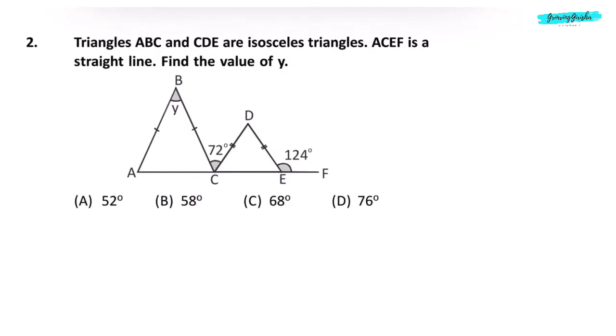Question 2. Triangles ABC and CDE are isosceles triangles. ACEF is a straight line. Find the value of Y. Angle E is 124 degrees. Angle E in triangle DCE will be 180 minus 124, that is equal to 56 degrees. If angle E is 56 degrees, angle C will also be 56 degrees because triangle DCE is an isosceles triangle.